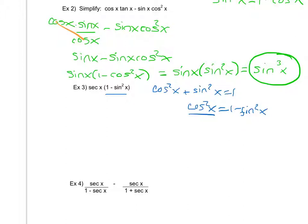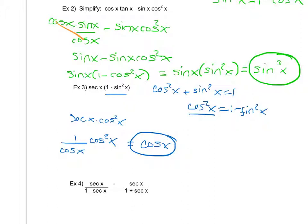So I can replace one minus sine squared x here with cosine squared x, giving me secant of x times cosine squared x. Now if I change secant to be in terms of cosines, I notice that since it's multiplication, I can reduce by a cosine. When a cosine cancels out, I'm left with cosine x — again, much simpler than the original expression.